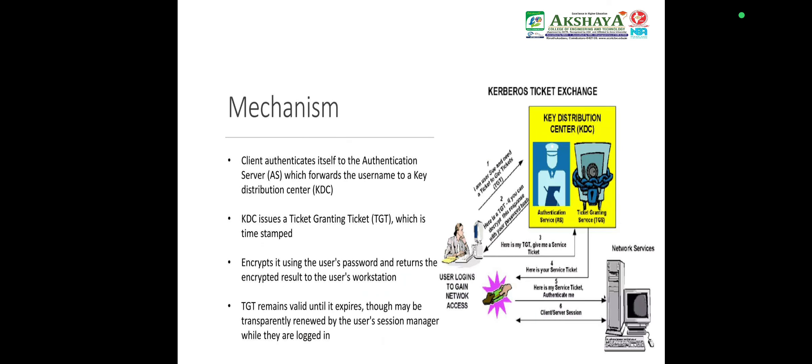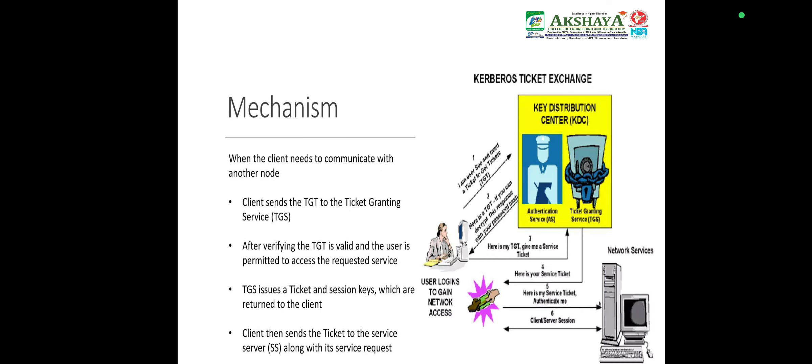Mechanism of Kerberos: The client authenticates itself to the Authentication Server (AS), which forwards the username to a Key Distribution Center. The KDC issues a Ticket Granting Ticket (TGT) which is timestamped, encrypted using the user's password, and the encrypted result is returned to the user's workstation. The TGT remains valid until it expires and may be transparently renewed by the user session manager while logged in. When the client needs to communicate with another node, it sends the TGT to the Ticket Granting Service. After verifying the TGT is valid and the user is permitted to access the requested service, the TGS issues a ticket and session keys which are returned to the client.